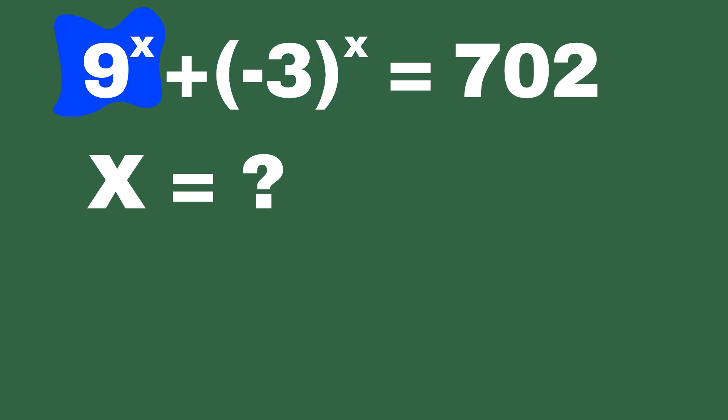So we have 9 to the x power, we add minus 3 to the power x and get 702. What is x? Alright, the key to solving this question lies in recognizing the relationship between 9 and minus 3. By relationship, I mean how one can be expressed in terms of the other.